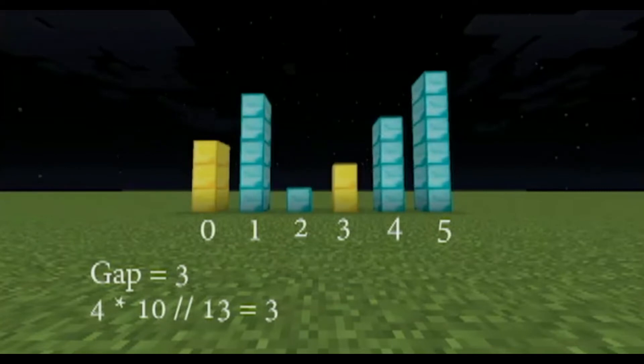Next, the gap shrinks to 3 because 4 times 10 divided by 13 floor is 3. Now I compare the 3 and the 2. They are out of order, so we swap them.